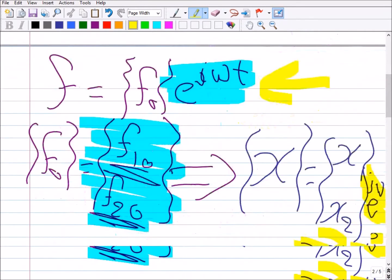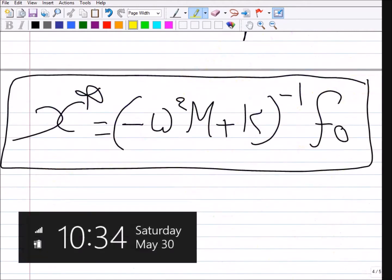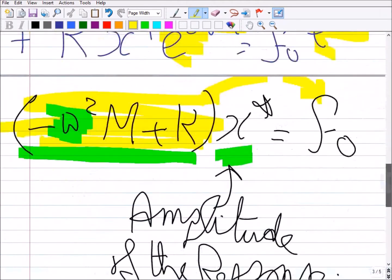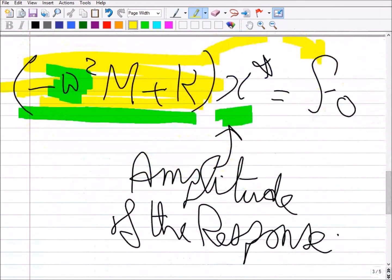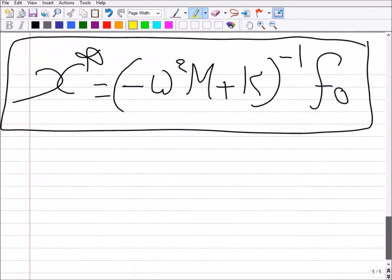But in the special case of harmonic excitation, what did we get? We ended up with an algebraic relation between the magnitude of the excitation and the magnitude of the response, which you could solve algebraically. So now we kind of have a relation that looks like the static problem.